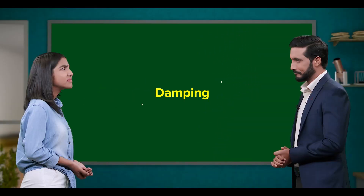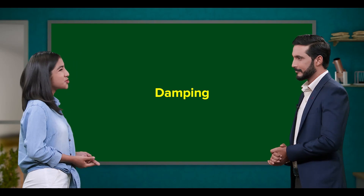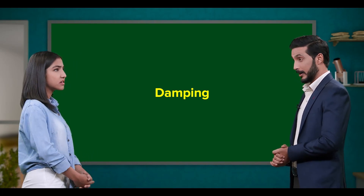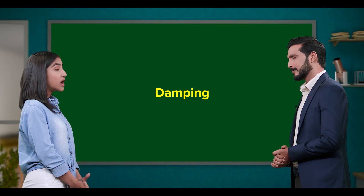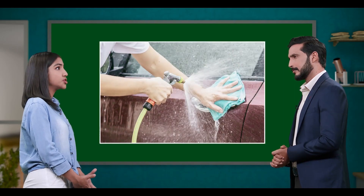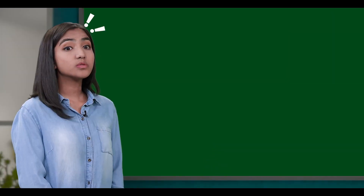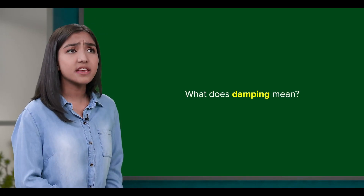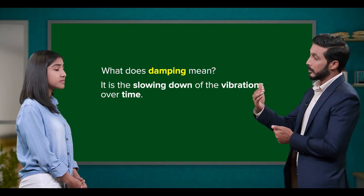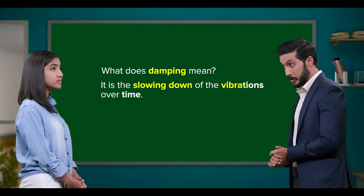The simple answer to your question is damping. Damping? You must be joking, right? Not at all. How on earth does moistening or wetting help cut down vibrations? I see — you must have confused this term with another similar-sounding word called dampening. So, teacher, what does damping mean in physics then? Simply put, it is the slowing down of vibrations over time.